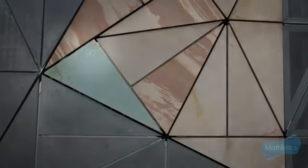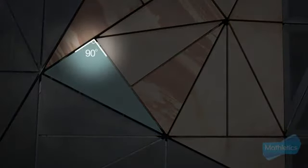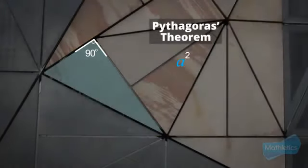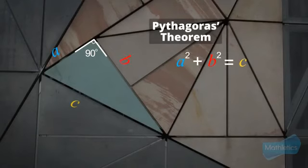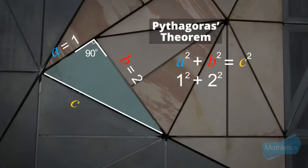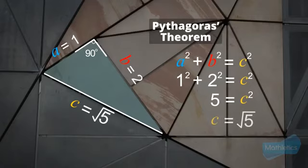This angle here is a right angle, so we can use Pythagoras' theorem. a squared plus b squared equals c squared. That helps us find the length of the longest side. 1 squared plus 2 squared is 5, so the hypotenuse would be the square root of 5.